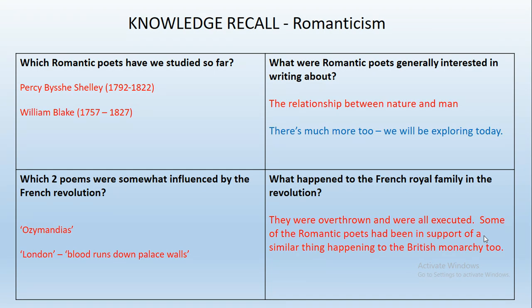Here are the answers. The Romantic poets we've studied so far are Shelley and Blake. Shelley wrote Ozymandias and Blake wrote London - they have some similarities and some differences. What were Romantic poets generally interested in writing about? They were very interested in writing about the relationship between nature and man, but there's a lot more to it than that. What you might remember is the relationship between nature and man, which is certainly relevant to the next poem we're going to study as well.